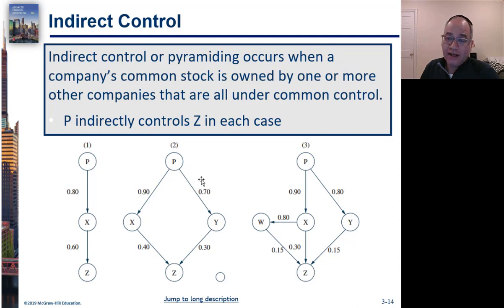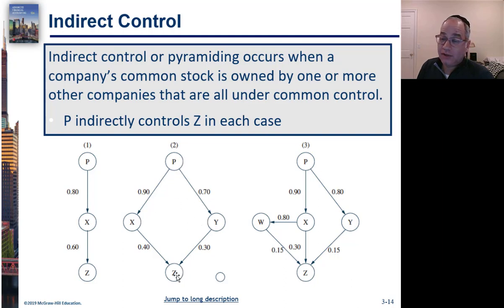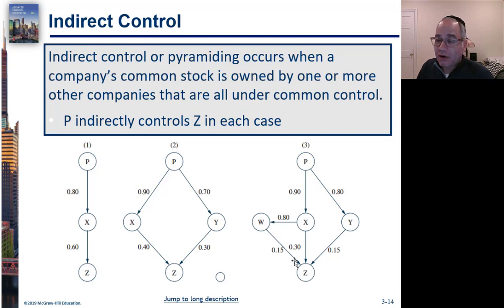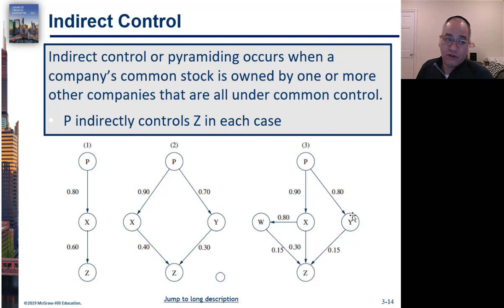Consider this: the parent owns 90% of X and 70% of Y, and X owns 40% of Z, and Y owns 30% of Z. So between them, X and Y own 70% of Z, and they're both controlled by P. So P indirectly controls Z. You could also have one more level where P owns X, which owns W, which owns Z, and also P owns Y, which owns a small piece of Z. If you add up all these shares, it's clear that P indirectly controls Z, but none of the individual entities directly control it.